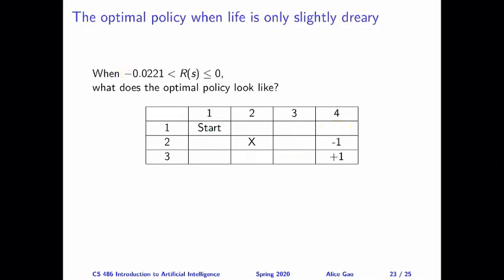Here's the next case. Our reward is even better — it could be up to zero, with a minimum around minus 0.02. So this is better than minus 0.04. In this case, life is only slightly dreary — not so bad at all. The agent takes no risk. It wants to avoid falling into the minus-one state by accident as much as possible, and is willing to bump into the wall many times to achieve this. Think about what the optimal policy looks like, then keep watching for the answer.